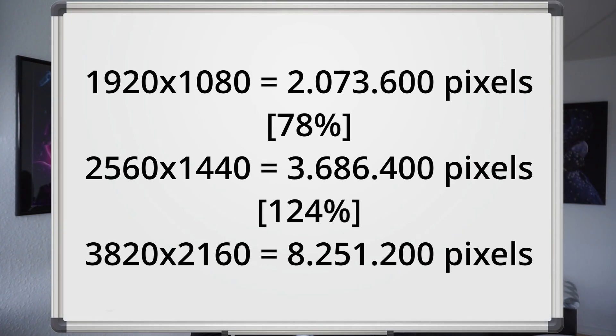I wanted to showcase these calculations because it helps you understand the differences between these four resolutions, but also helps when you are trying to decide which resolution you want to use. And if we go a step further and calculate the difference between 1080p and 4K, you can see that there are almost 300% more pixels in 4K compared to 1080p, which showcases why it was such a big difference going from Full HD or 1080p TVs over to 4K or Ultra HD TVs. With these numbers, you can get a feel for how big a transition it is — going from 1440p to 4K is actually a much bigger difference than going from 1080p to 1440p.